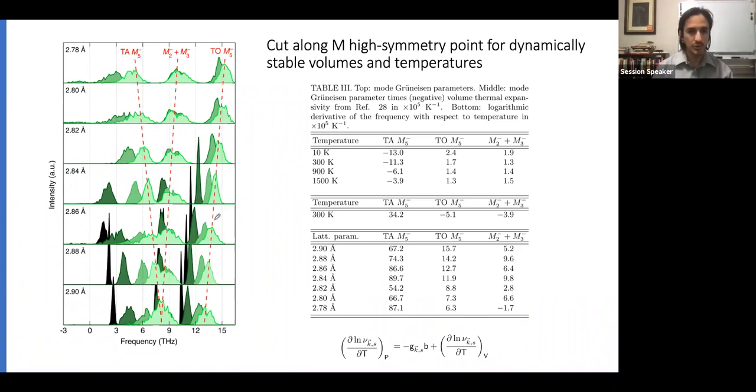Here we have a cut along the high symmetry point, and the different colors are different temperatures. Black is 10 Kelvin, and light green is 1500 Kelvin. As the temperature increases, the modes move to higher frequencies. But as the volume is compressed in this direction, the transverse optical M5 and the combined M2 and M3 phonon modes move to higher energies, which is what you expect from most materials. But the transverse M5 goes to lower energies, which is not typical, and so we're quantifying that.